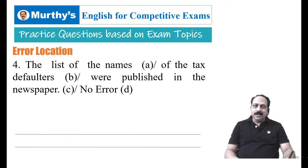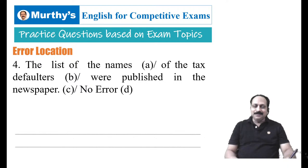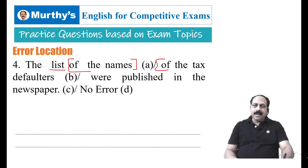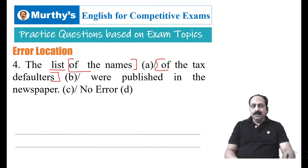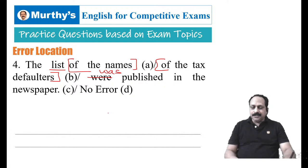Question four: The list of the names of the tax defaulters were published in the newspaper. What is the subject of this sentence? The list — of the names is a phrase, of the tax defaulters is another phrase. The list is singular, so we cannot use a plural verb. The list was published — that is the correct form.